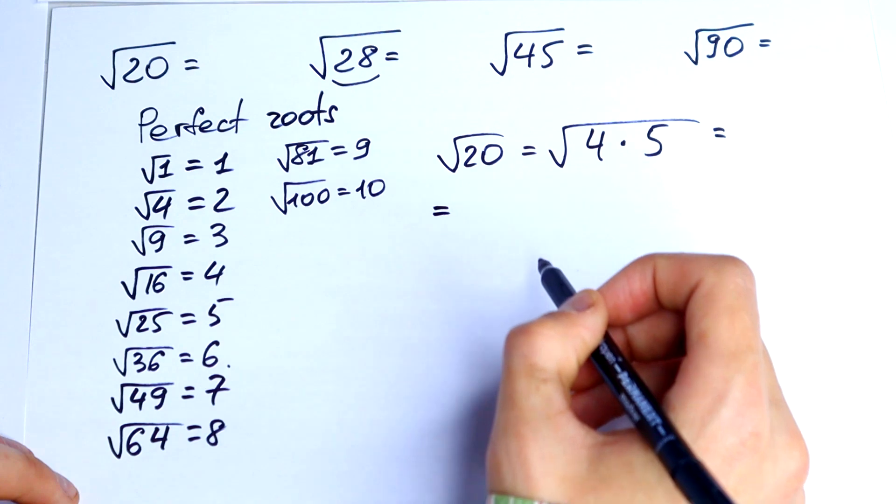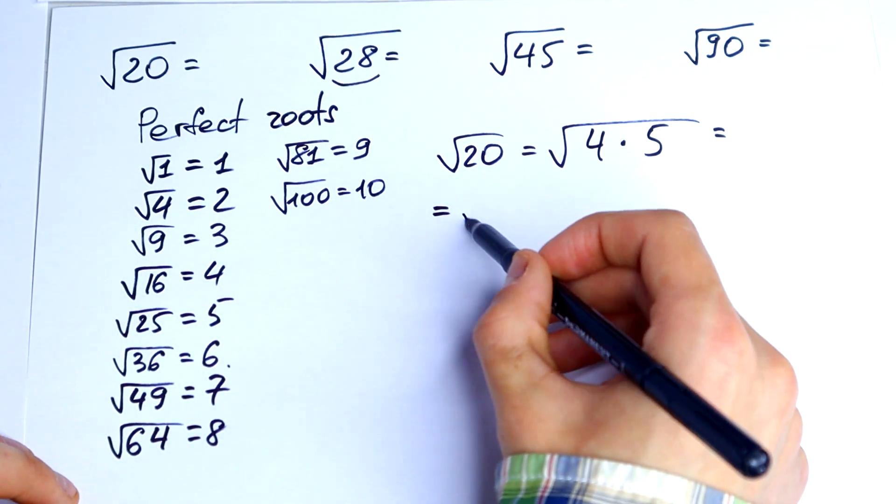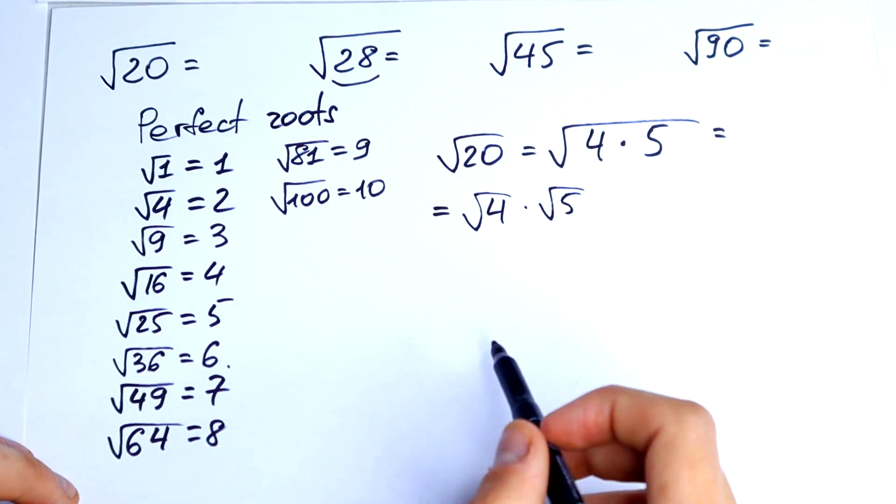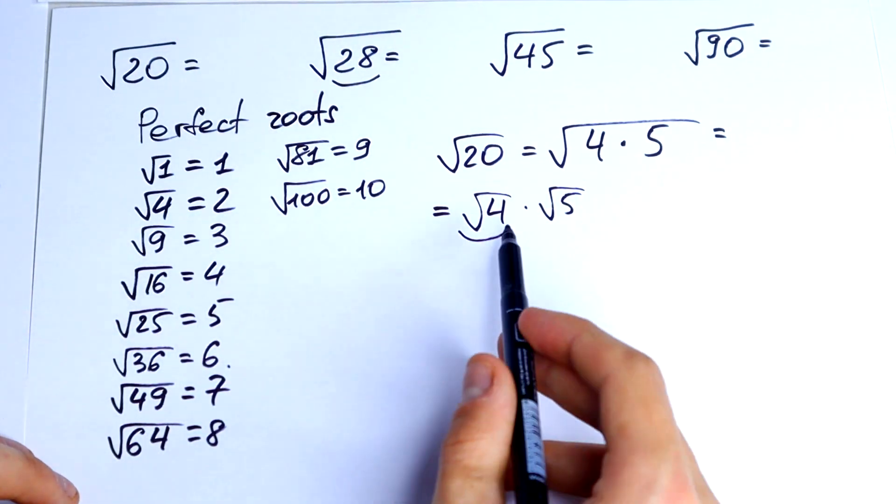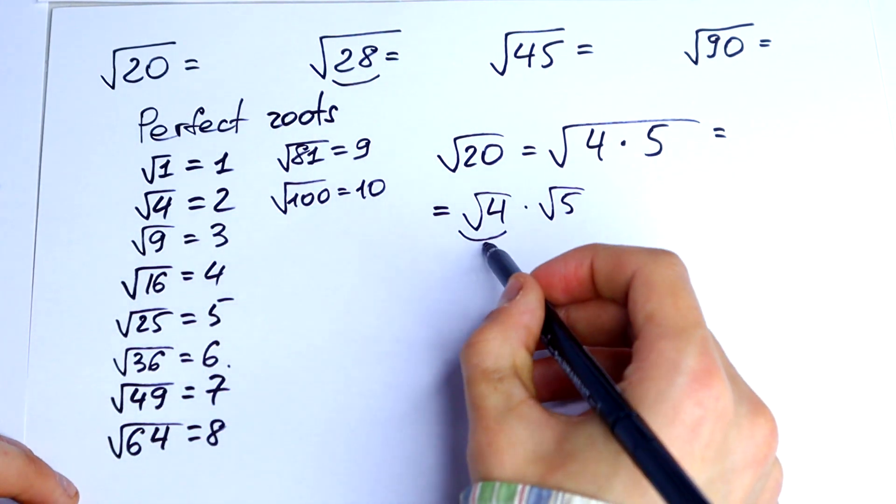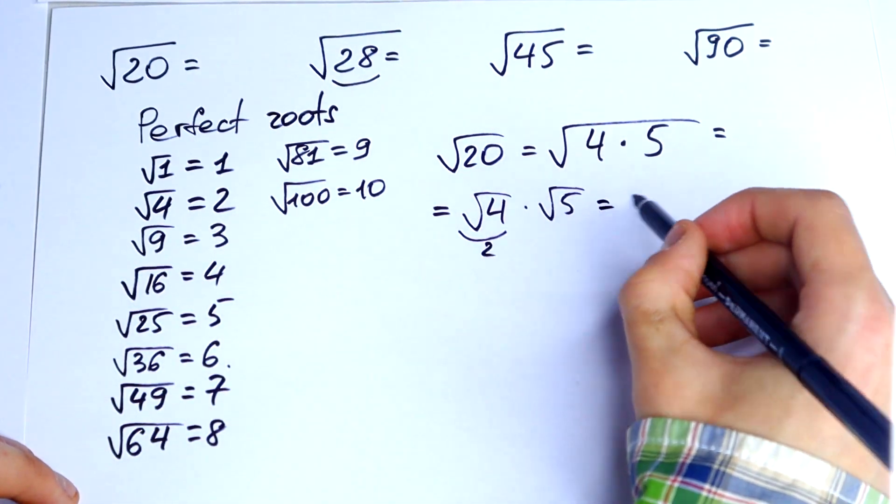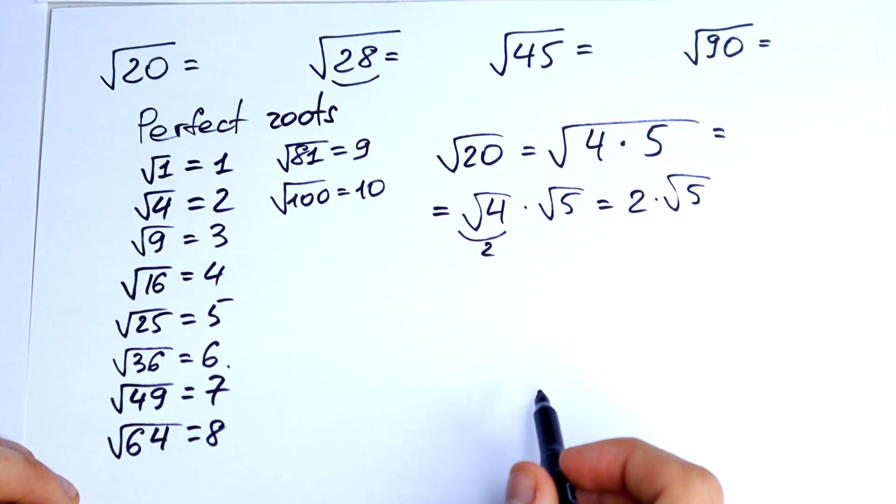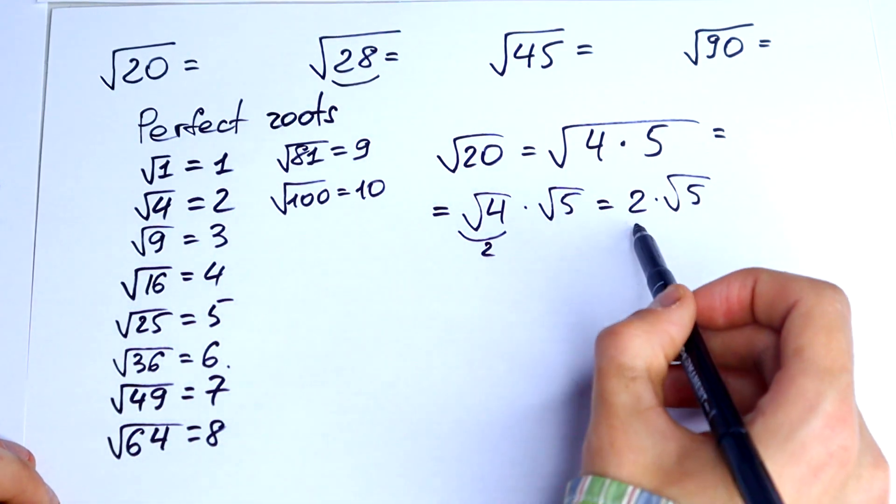And using the law of exponents it would be equal to square root of 4 times square root of 5. This square root we can see here, it would be equal to 2. So the answer is 2 times square root of 5. And this is enough, this is an answer.